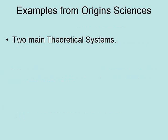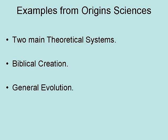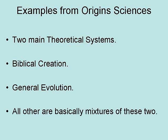From origin sciences, we have two main theoretical systems. Biblical creation, which includes six days of creation, a global flood, and a young earth. General evolution, which includes the big bang cosmology, the nebula theory of star and planet formation, uniformitarian geology, abiogenesis, and biological evolution. All others are basically mixtures of these two, including old earth creation and theistic evolution.